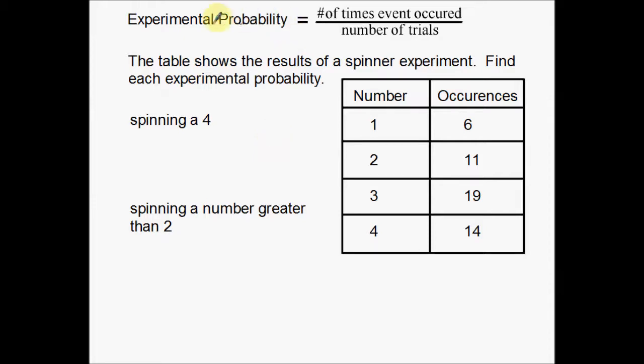Instead of what you want over total, experimental probability is the number of times the event occurred over your number of trials. So the big difference between theoretical and experimental probability, experimental probability actually uses data.